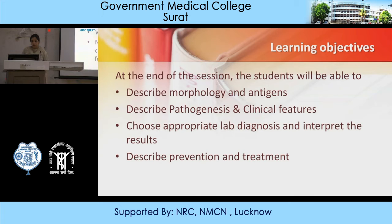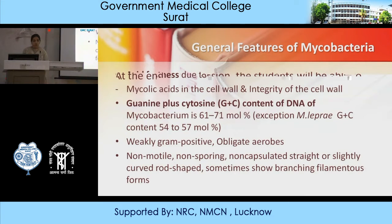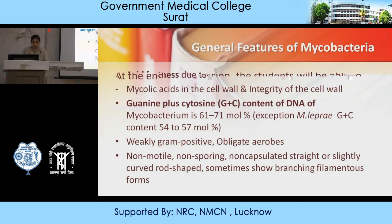First, we know about the general features of mycobacteria. These mycobacteria are acid-fast due to the mycolic acid in the cell wall and integrity of the cell wall. They have a guanine plus cytosine G+C content of DNA: 61 to 71 molecular percentage in M. tuberculosis, except M. leprae which is 54 to 57 molecular percentage. In Gram stain, they are weakly gram-positive and obligate aerobes. These mycobacteria are non-motile, non-sporing, non-capsulated, straight or slightly curved, rod-shaped, sometimes showing branching filamentous forms under microscopy.